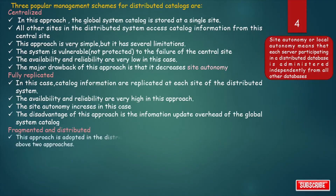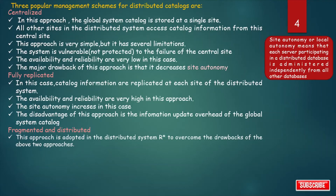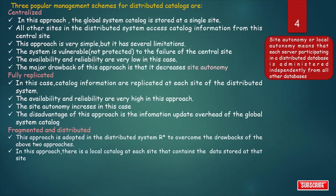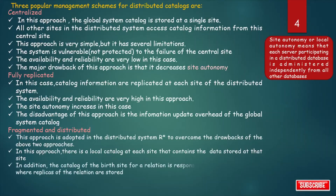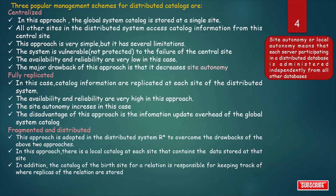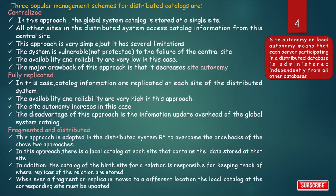The last scheme is Fragmented and Distributed, adapted in the distributed system R* to overcome the drawbacks of the above two approaches. In this approach, there is a local catalog at each site containing data stored at that particular site. In addition, the catalog of the birth site for a relation is responsible for tracking where replicas of that relation are stored. Whenever a fragment or replica is moved from one site to another, the local catalog at the corresponding site must be updated, but the birth site information does not change.